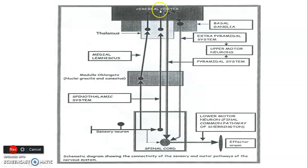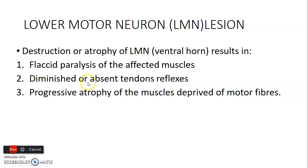Lower motor neurons are the ones that contact the muscles. Lesions of lower motor neurons occur where there's destruction or atrophy of these neurons at the level of the ventral horns of the spinal cord. The three features of lower motor neuron lesions are: flaccid paralysis of the muscles, diminished tendon reflexes — which may be reduced or even absent — and atrophy. Muscles feed from blood vessels and also from the nerves that innervate them, so lower motor neuron lesions cause muscle atrophy.